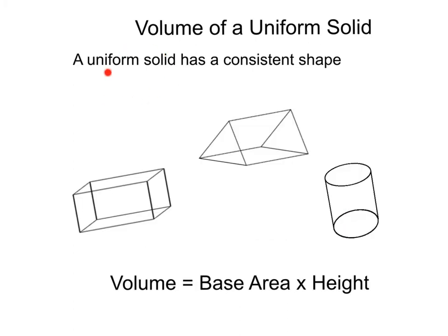When we talk about a uniform solid, we talk about something that has a consistent shape throughout. These are three different examples. Our first shape is a rectangle from start to finish. Our next shape is a triangle all the way throughout the solid.